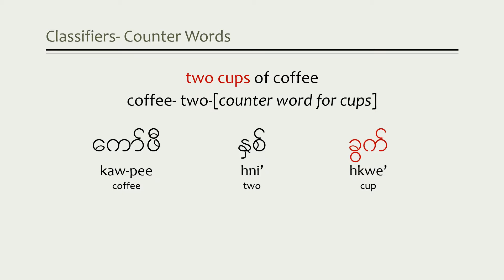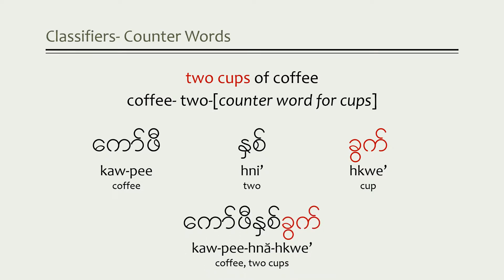Sometimes the counter word associated with a root noun is only that — a counter word. But other times, as in this case, the counter word for cups of coffee is the actual word for cup: 'quet'. When we put it all together, we have to soften the sound of one of the syllables — you'll learn why in another lesson. So it's going to sound like this: coffee, ne, quet.